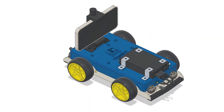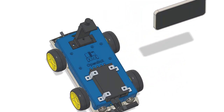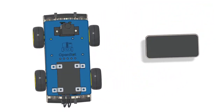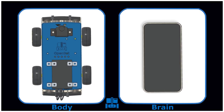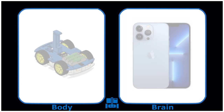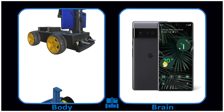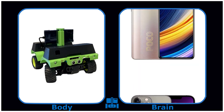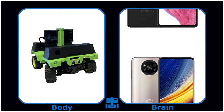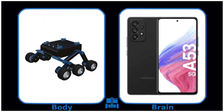An OpenBot is composed of two elements: a fully customizable robot body and a smartphone that serves as its brain. The OpenBot framework can be deployed on virtually any vehicle or robot. The embedded software stack is compatible with most Android smartphones and will soon be extended to the Apple ecosystem.